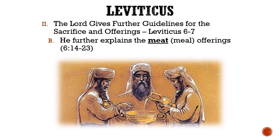Letter B: The Lord further explains the meat or meal offerings. Aaron's sons were to offer the unleavened flour with oil and frankincense on the altar, and any leftovers were to be eaten by all the men of the household of Aaron, except in the case of a meat offering given directly by the priests themselves — then it was to be cooked completely.